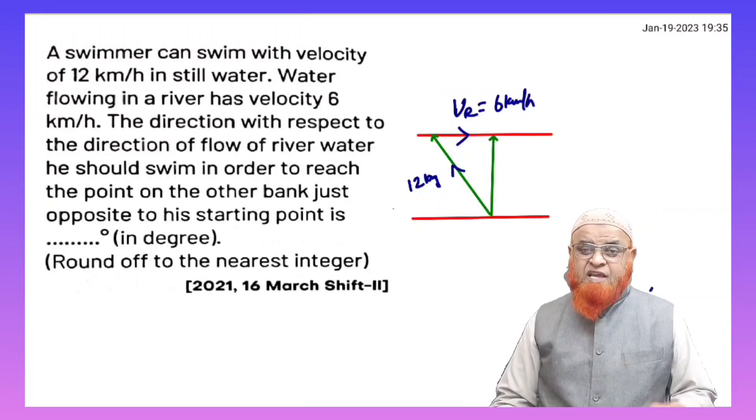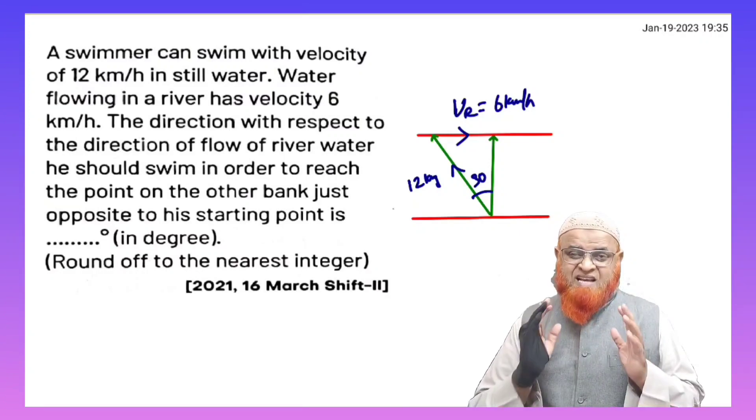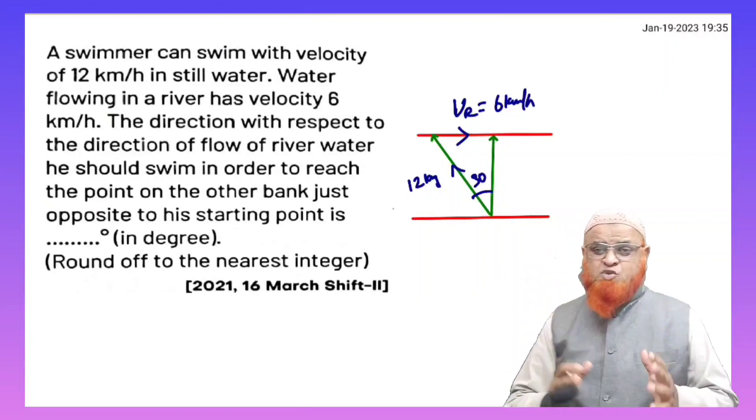And by seeing this data, you can just tell that this is going to be 30 degrees, because sin theta is going to be opposite side by hypotenuse, which is 6 by 12, which is 1 by 2. So 30.